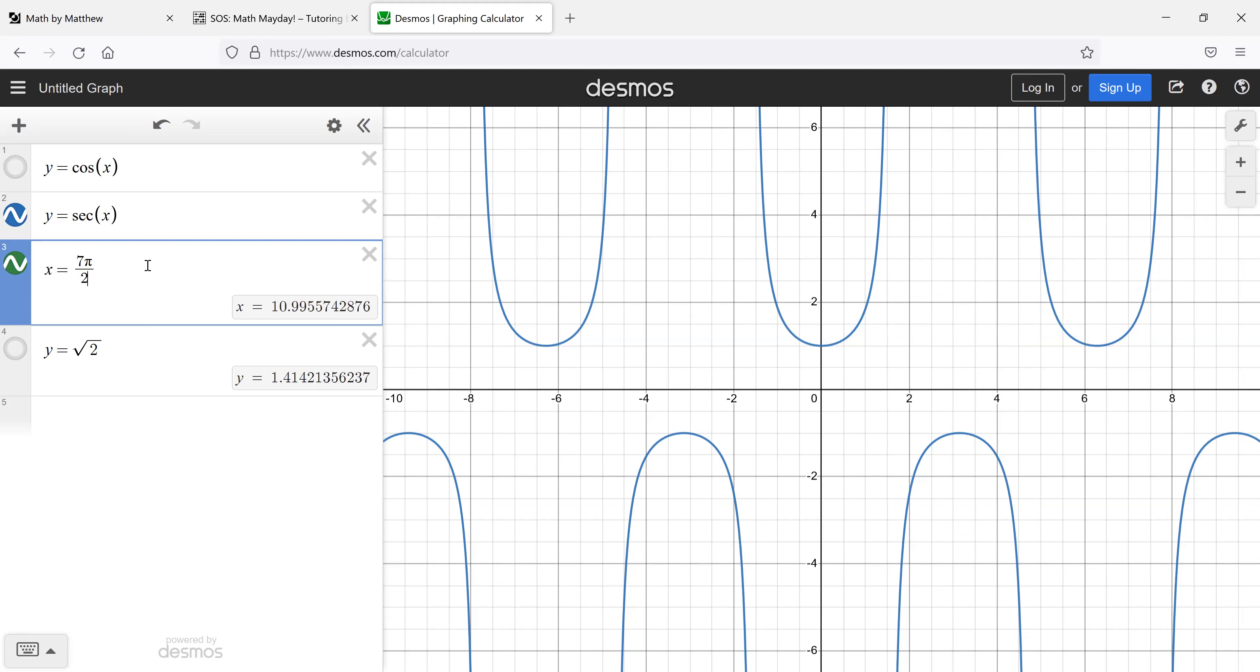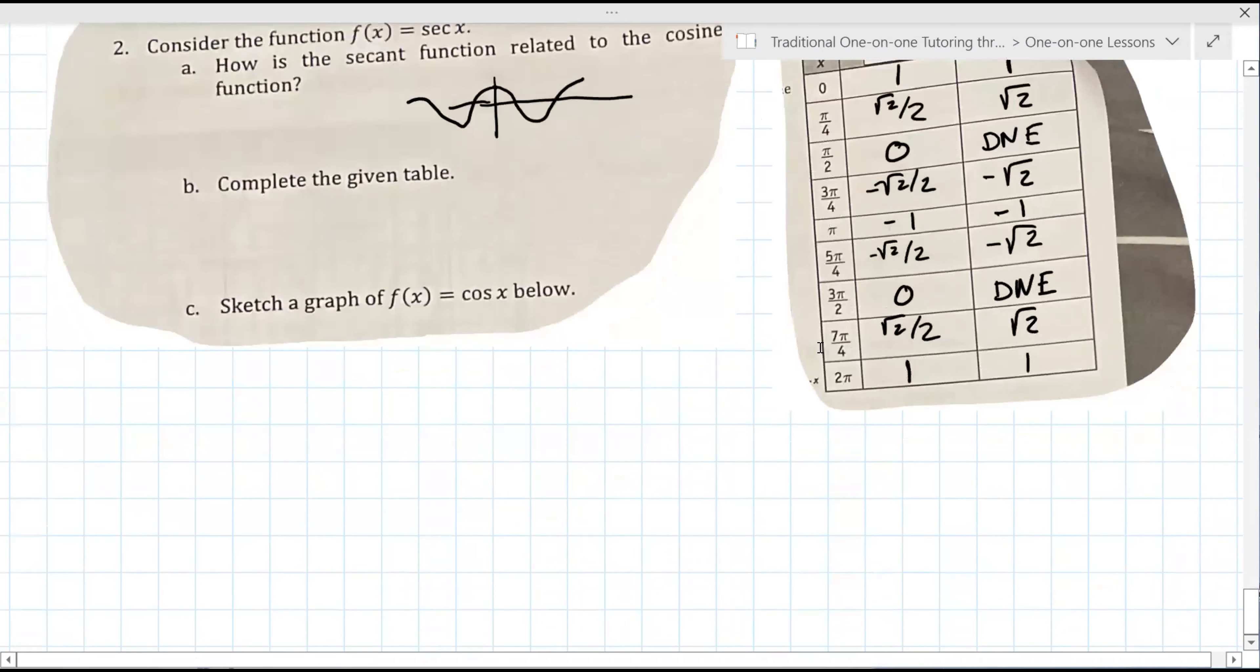So now we'll go to seven π over four. And that does hit that square root of two. And then the last point is at two π, which is one. Now I'm going to go back to the screen. I'm going to show you how you could have done this without the graphs.